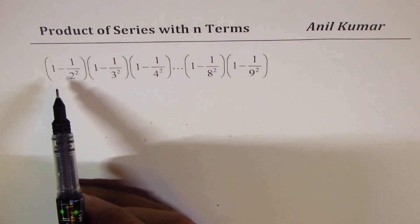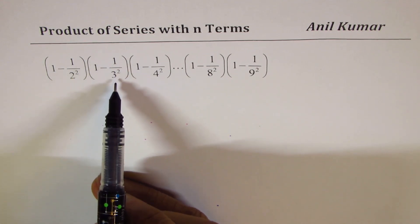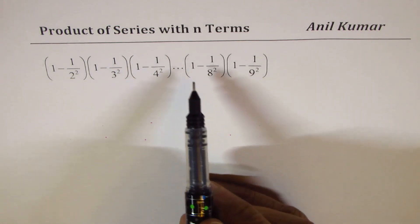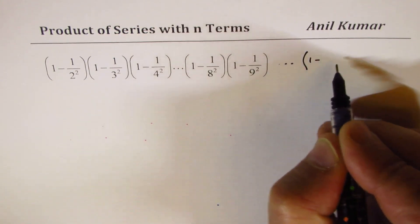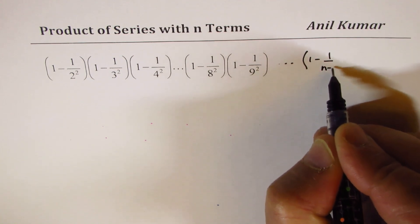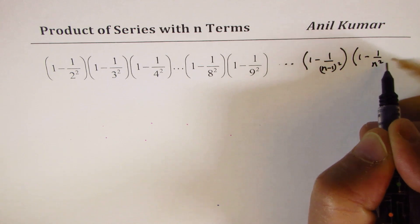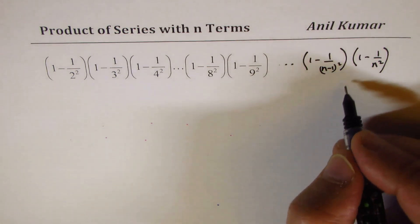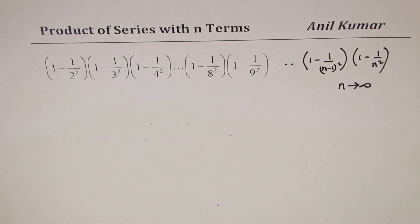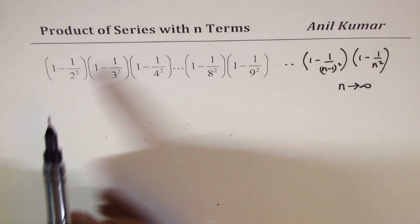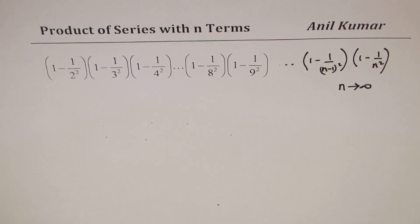Now, let us look into the second series, which is 1 minus 1 over 2 square times 1 minus 1 over 3 square times 1 minus 1 over 4 square, so on. We will also extend this series to 1 minus 1 over n minus 1 over n square. We will see all the results. And then, lastly, we will also consider the case when n approaches infinity. Now, to solve this series, you can do the same method as we did earlier. However, there is a better option.